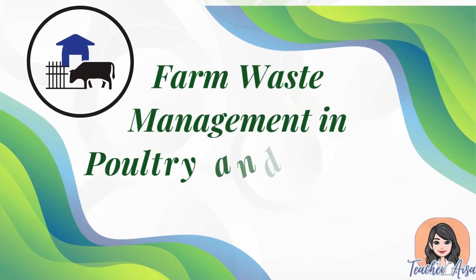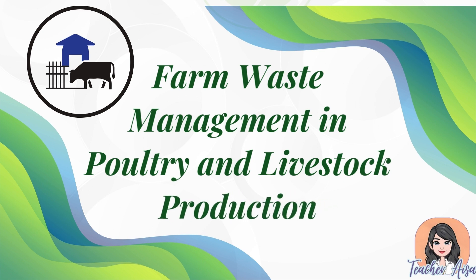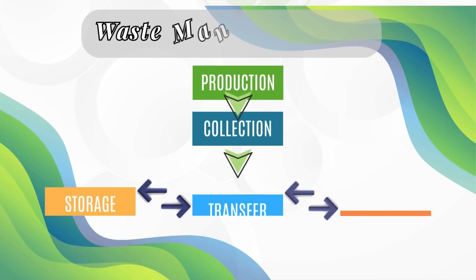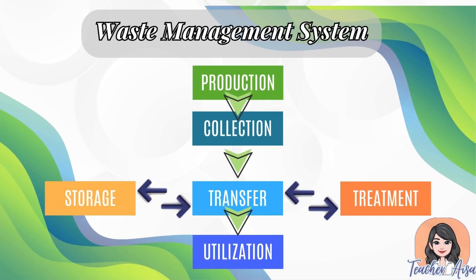Farm waste management in poultry and livestock production involves six basic functions: production or generation, collection, transfer, storage, treatment, and utilization. In the waste management system, production refers to waste generated from animal manure, bedding, feed leftovers, and wastewater. Collection involves manure and waste being collected manually or using mechanical systems like scrapers or conveyors.